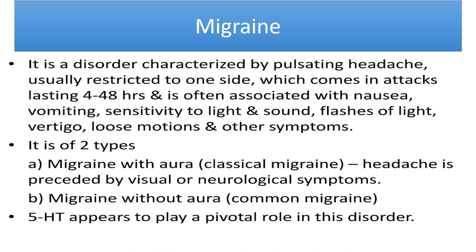Migraine with aura is the pulsatile headache preceded by neurological symptoms like visual and sensory disturbances, with or without speech and motor disturbances. The other kind is migraine without aura — a severe unilateral pulsatile headache that typically lasts for two to three days.